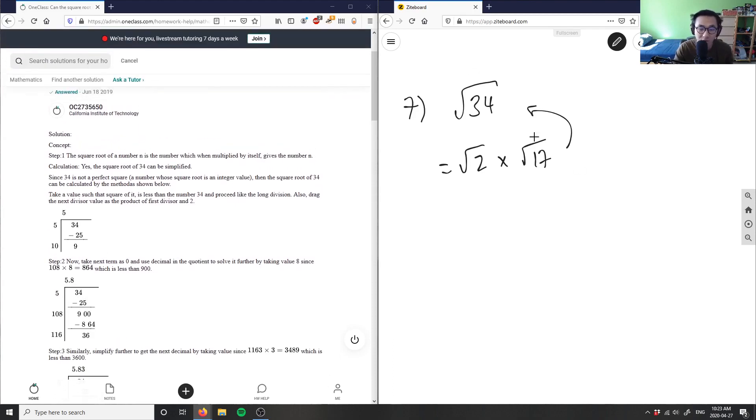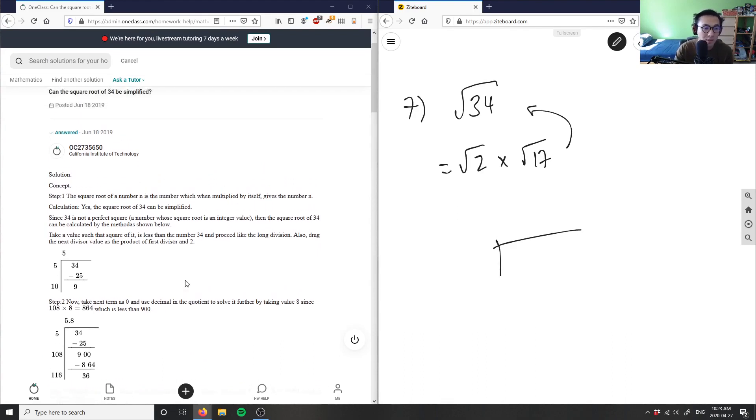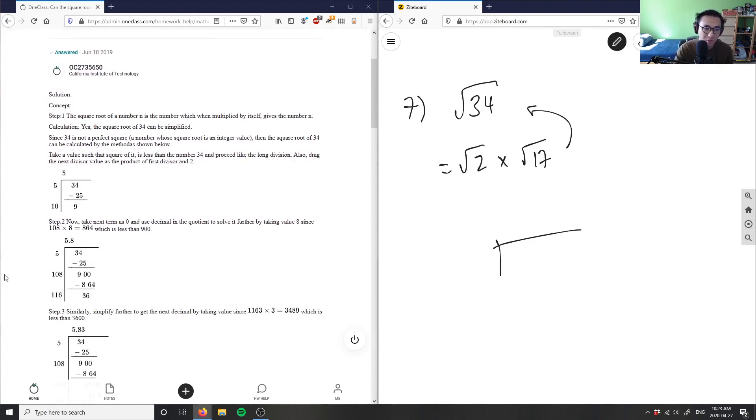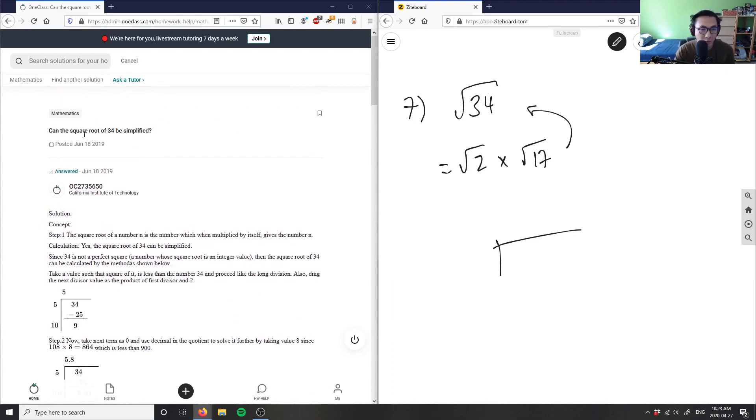Let me go over the solution with you. They're basically just using long division. Sometimes we have to do this if they're asking us what the approximate value of square root 34 is. If the question was asking what is the approximate value of square root 34, we would definitely use this method.